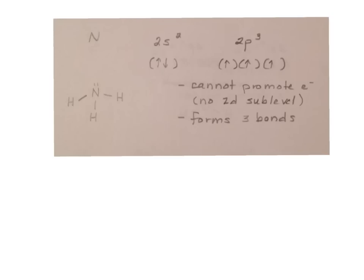Nitrogen, 2s2, 2p3, has three unpaired electrons. So it forms a compound like NH3. And you can see that this lone pair is right there. And it forms one, two, three bonds because it has one, two, three unpaired electrons.